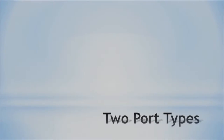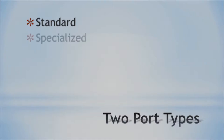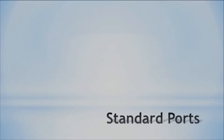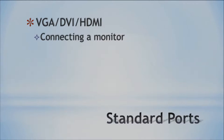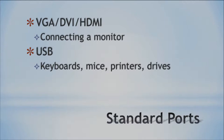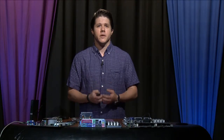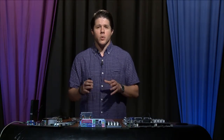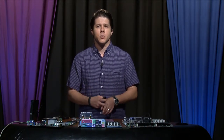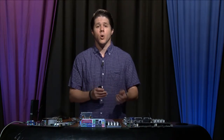We have two types of ports to keep in mind: your standard port and your specialized port. Standard ports include things such as VGA, DVI, and HDMI, which we use mostly for connecting a monitor. Another standard port is USB, which you can plug a lot of different items into — commonly keyboards, mice, printers, and external drives. We also plug Ethernet in when we're not using wireless. Those are your standard ports commonly seen on the back or front of your system unit.